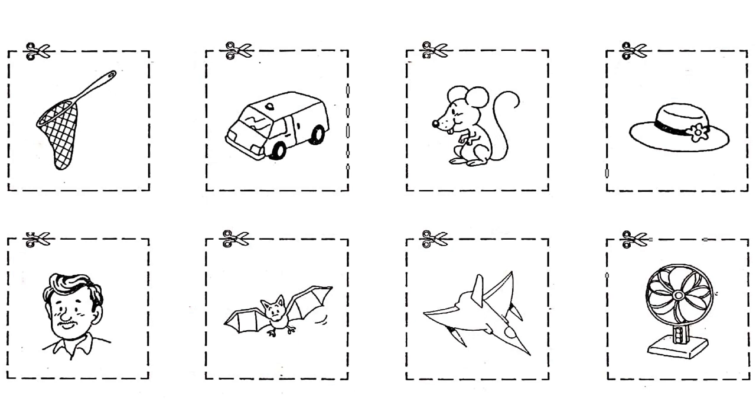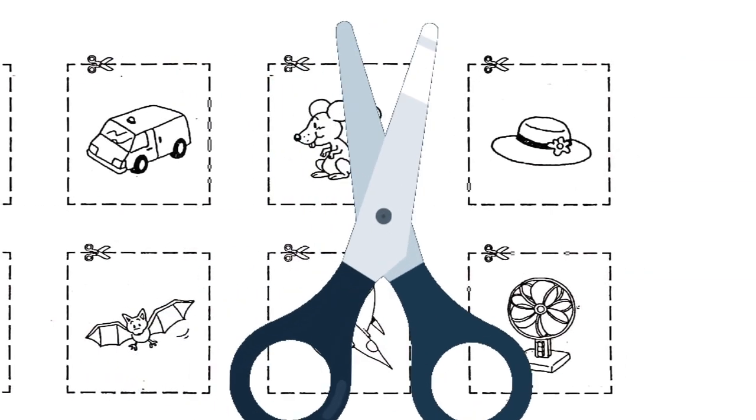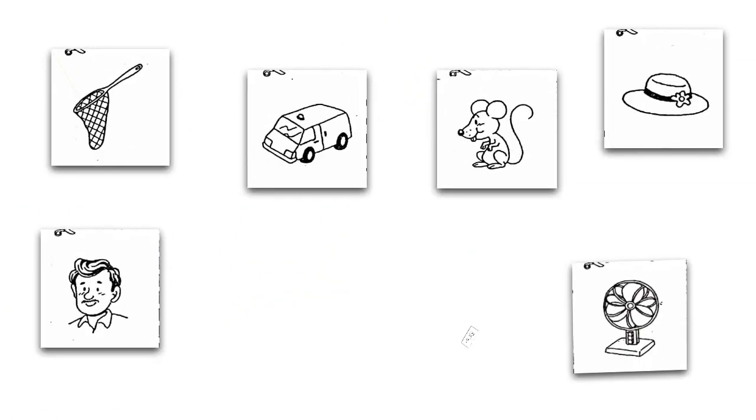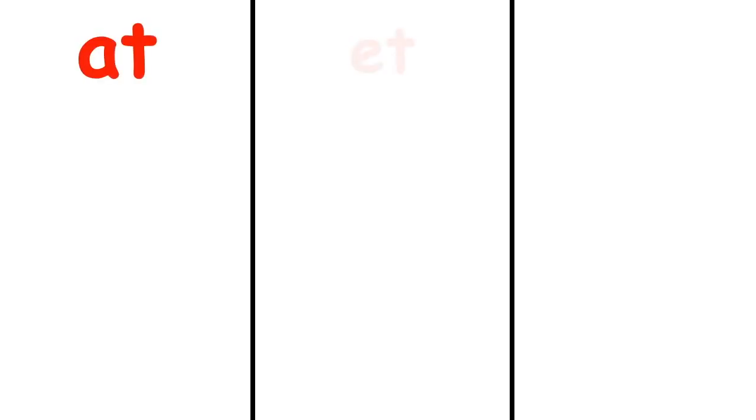There are 8 pictures here. Cut them out. Now we have to divide them into 3 groups: AT, ET, and AN.